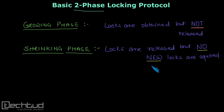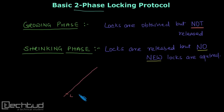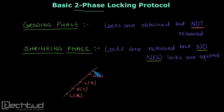So what I mean by this is: if you assume a transaction like this — this is the growing phase of the transaction. Here, let's say I lock data item X and apply some lock, then I read the data item. Then I apply another lock on some data item B, then I write data item B. We go further and further, and once we start unlocking — for example, here I unlock B — once I start unlocking...